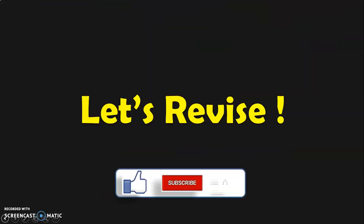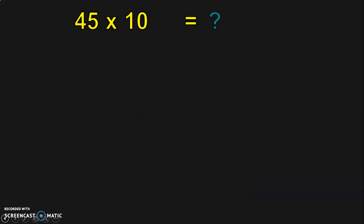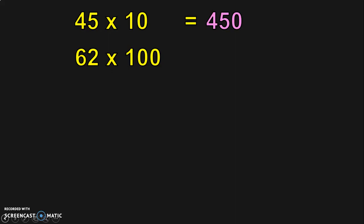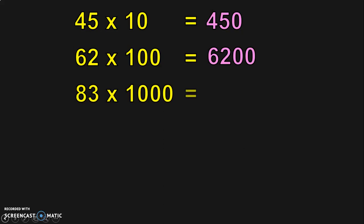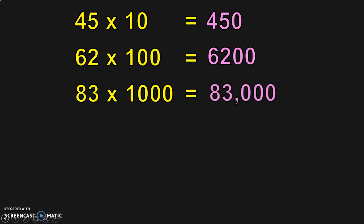Let us quickly revise what we have learned so far. 45 into 10 — we are multiplying by 10, so 45 should be followed by a zero. The answer is 450. Next, 62 into 100 — follow 62 with two zeros, which gives you 6,200. Next, 83 into 1,000 — write down 83 followed by three zeros. It becomes a 5-digit number and the answer is 83,000.